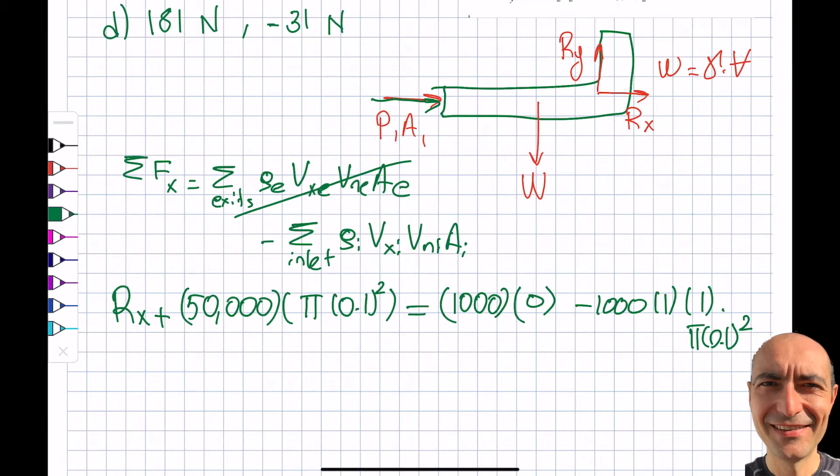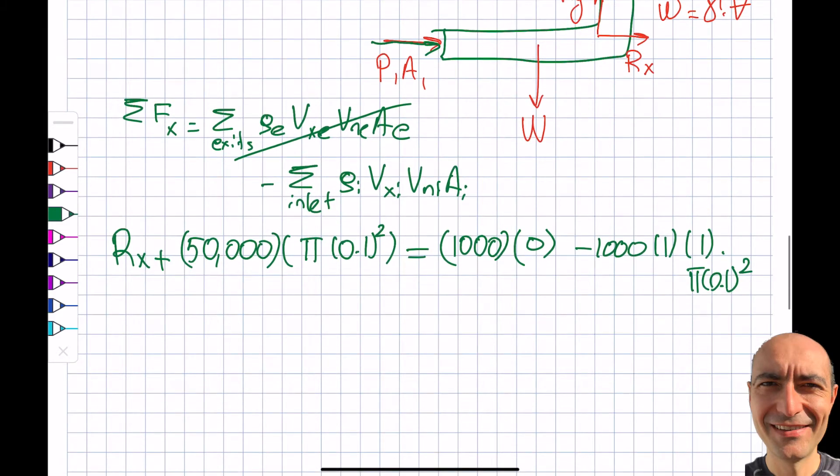So if I plug the numbers in, I get myself Rx is equal to -510π. So if I plug this into my calculator, I get myself right around -1,602 Newtons as my force in the x direction.